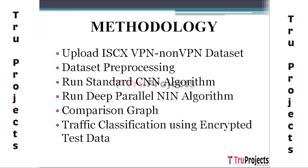The fifth module is the comparison graph. After training and testing both the standard CNN and the deep parallel NIN models, a comparison graph is generated. This graph displays metrics such as accuracy, precision, recall, and F1 score for both models, providing a clear visual understanding of how well each model performs in classifying encrypted network traffic.